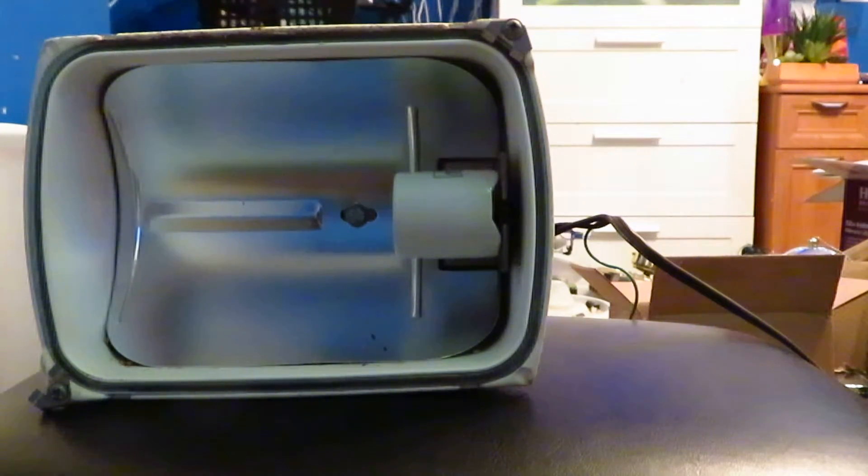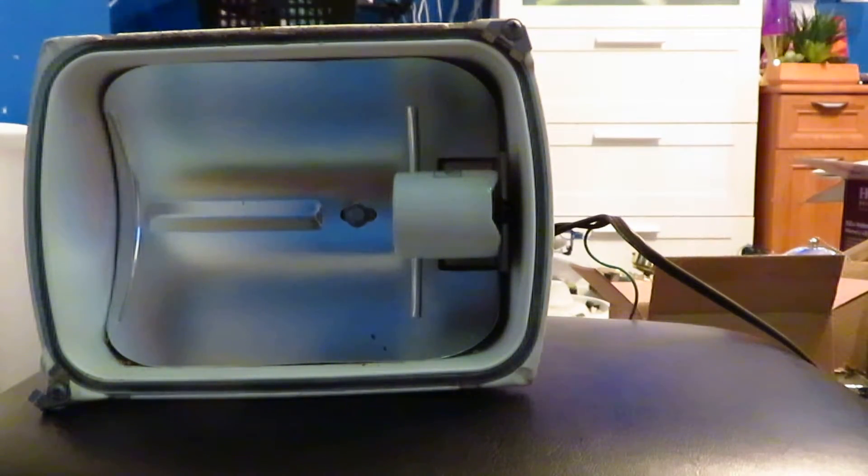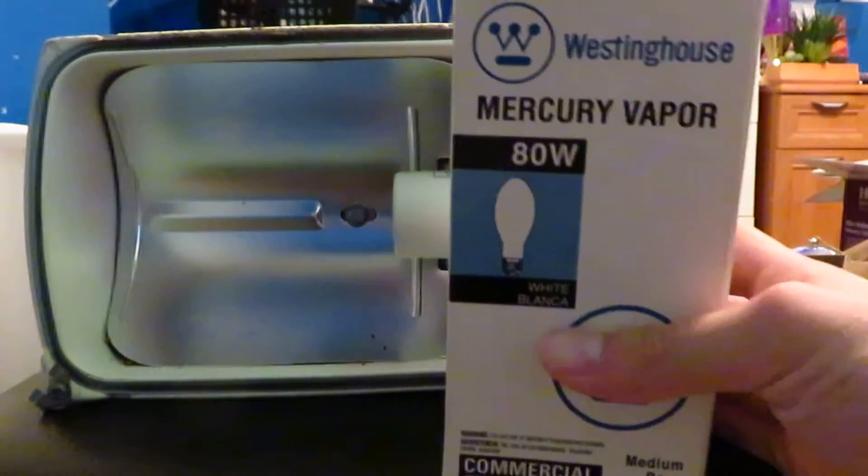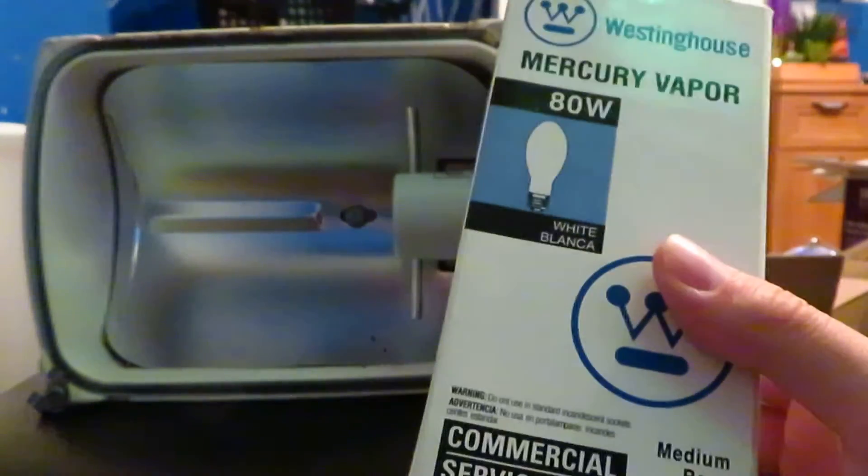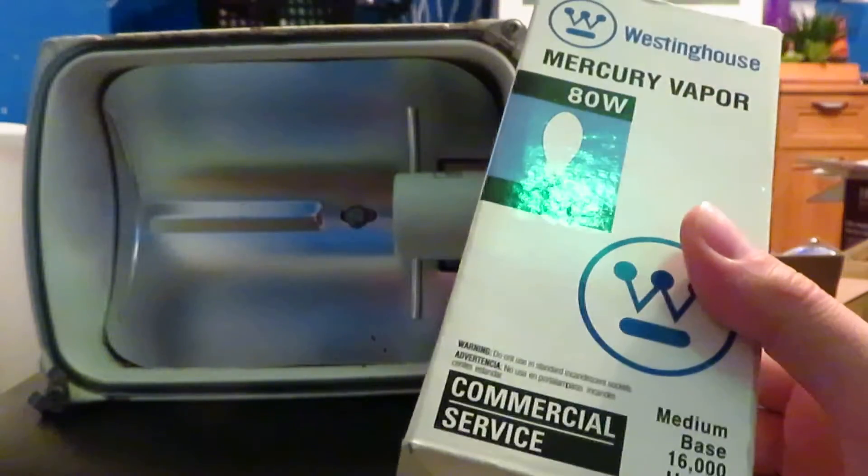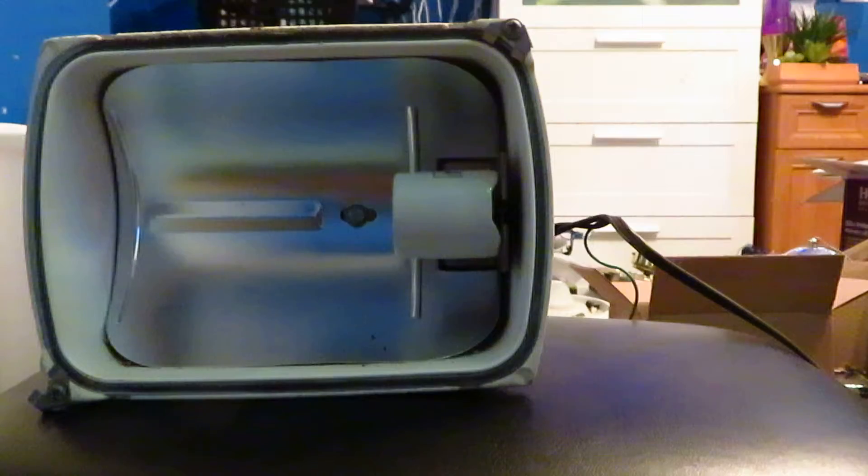So the box trademark is 2003, so that doesn't really tell me if this lamp was made then, because this is the same box that they use today for their HID lighting stuff, including mercury. So I'm not sure how old this is, but I would guess it's probably mid-2000s.